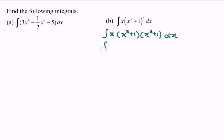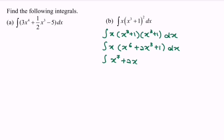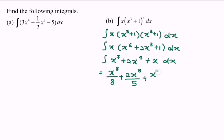Expand, and we will have x to the power of 6 plus 2 multiplied with x to the power of 3, plus 1. Next, we will have the integral of x to the power of 7 plus 2 multiplied with x to the power of 4, plus x, with respect to x. So now we will have x to the power of 8 over 8, plus 2 multiplied with x to the power of 5 over 5, plus x squared over 2, plus c.